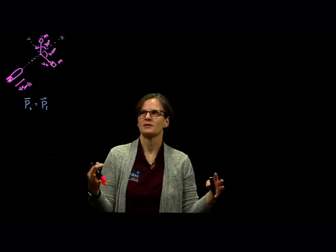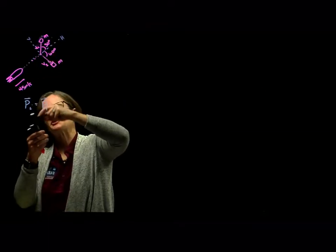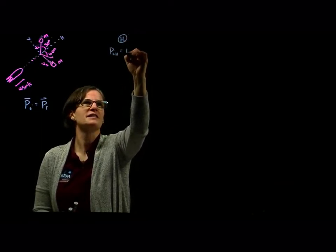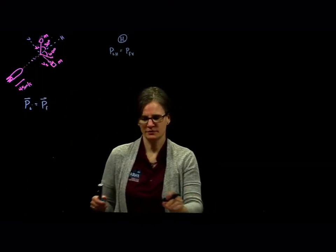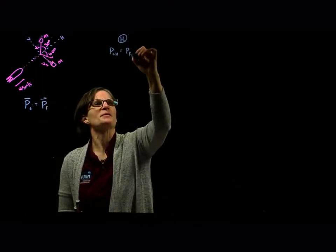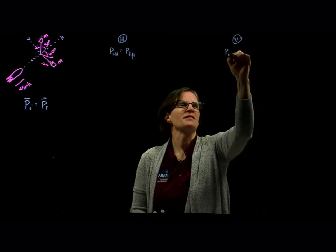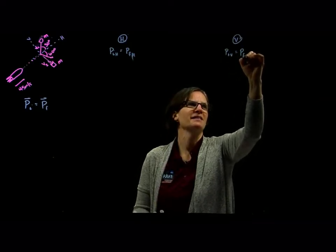Now it's moving in the horizontal direction initially. It splits and moves in both the horizontal and vertical directions at 60 degrees. We want to separate our conservation into the conservation of momentum for the horizontal direction, and the vertical dimension, where the momentum of the system vertically has to also be conserved.